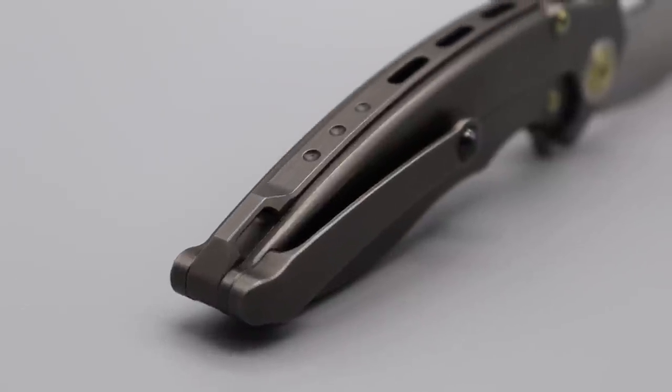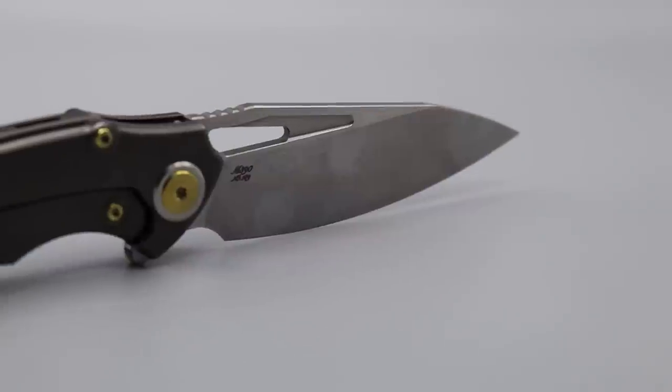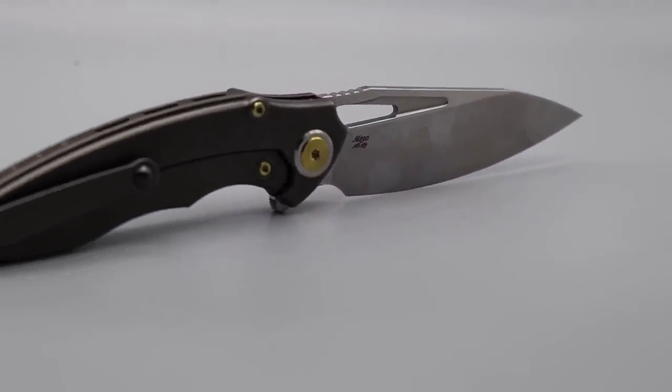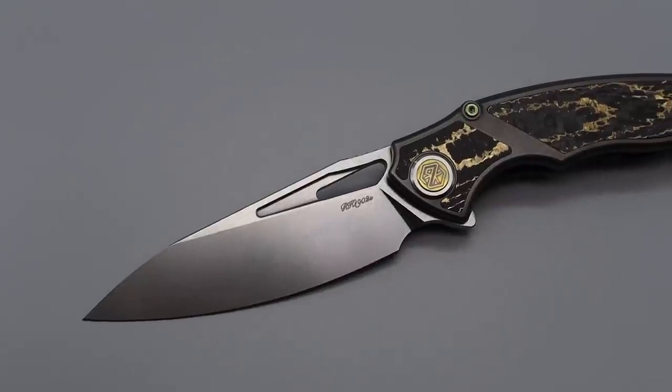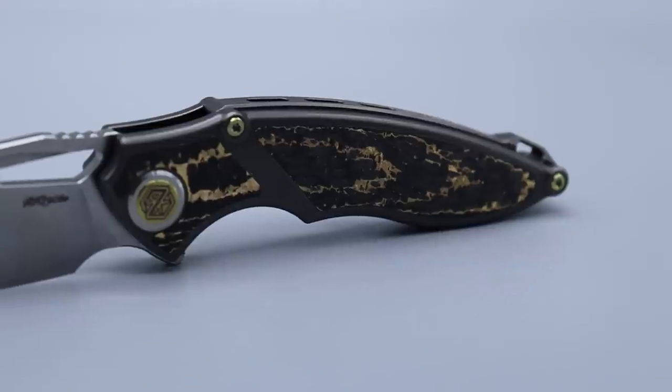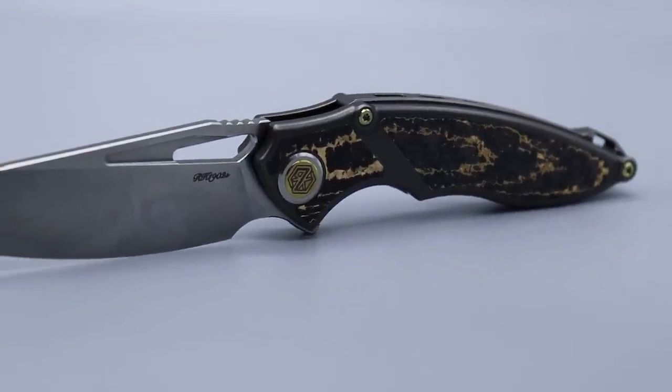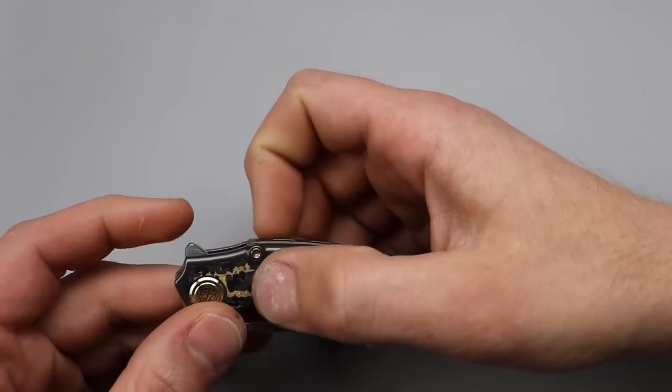Now this knife right here, full titanium M390. Lots of details on it. This carbon fiber, this gold shred carbon fiber looks really good. The inlay work is done extremely well. Rike does some amazing milling and machining. They're one of the top contenders when it comes to machining and milling.